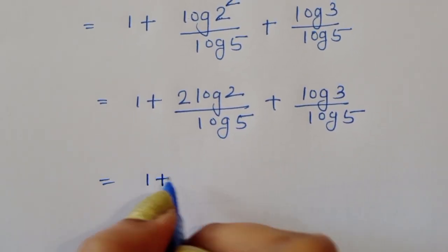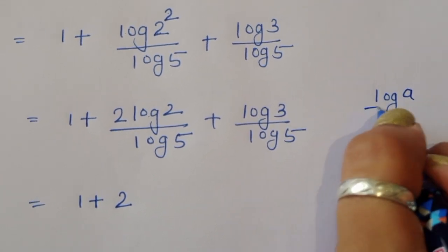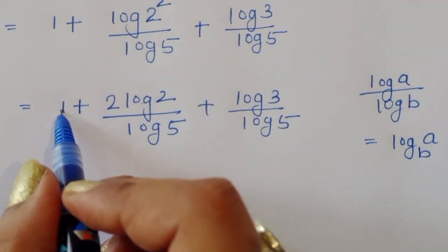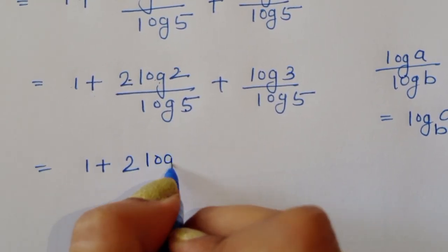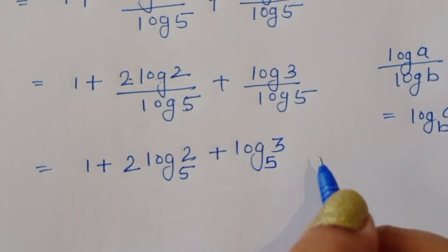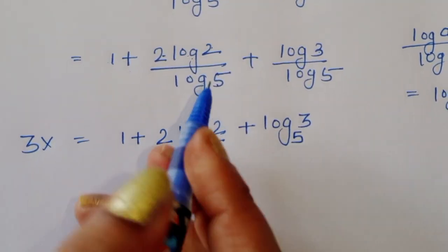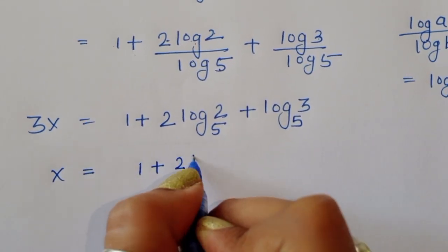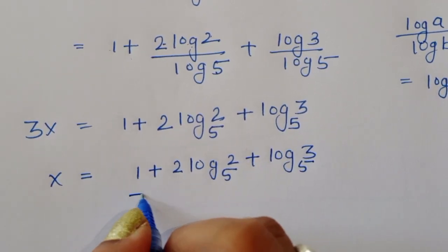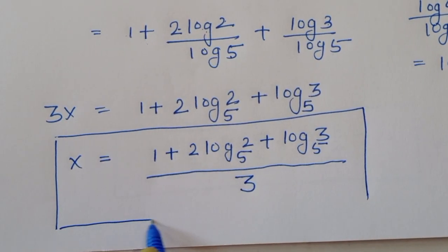Using the change-of-base formula — log(a) divided by log(b) equals log_b(a) — we can write this as 1 plus 2·log_5(2) plus log_5(3). This is the value of 3x. To find x, we divide both sides by 3, giving x = [1 + 2·log_5(2) + log_5(3)] / 3.